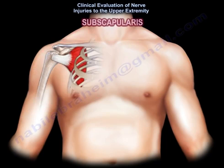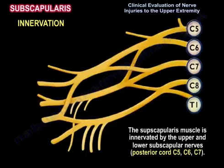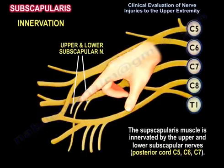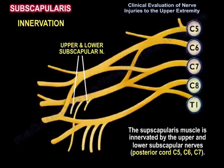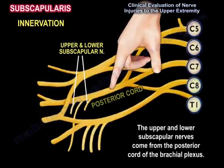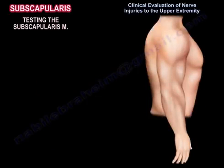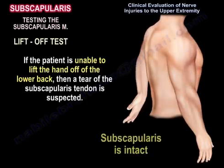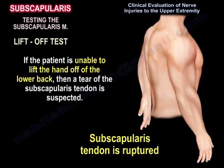The subscapularis muscle is innervated by the upper and lower subscapular nerves, which arise from the posterior cord at C5, C6, C7. To test the subscapularis, the lift-off test is used: if the patient is unable to lift the hand off the lower back, the muscle is weak and a tear of the subscapularis tendon is suspected.